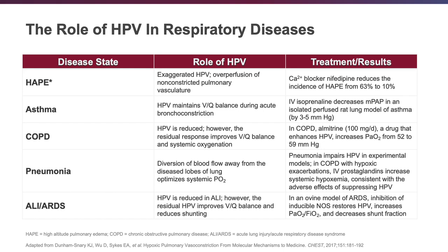In pneumonia, we have vasoconstriction of the pulmonary arteries due to HPV, diverting blood flow away from diseased alveoli — alveoli that are filled with infection and fluid as a result of the pneumonia — with diversion of blood flow away to regions that are better ventilated, so we can optimize ventilation and perfusion matching.